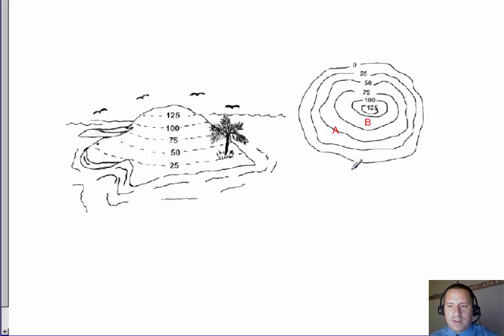Right here on the right, we have an example of a topographic map. It's a top-down view that shows different elevations. This is a three-dimensional view showing the exact same island, what it might look like. So around the outside of the island, we have where it borders the sea. Now this is elevation zero, because that's sea level.